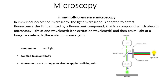What is Immunofluorescence Microscopy? In Immunofluorescence Microscopy, the light microscope is adapted to detect fluorescence — the light emitted by a fluorescent compound. That is a compound which absorbs light at one wavelength, the excitation wavelength, and then emits light at a longer wavelength.